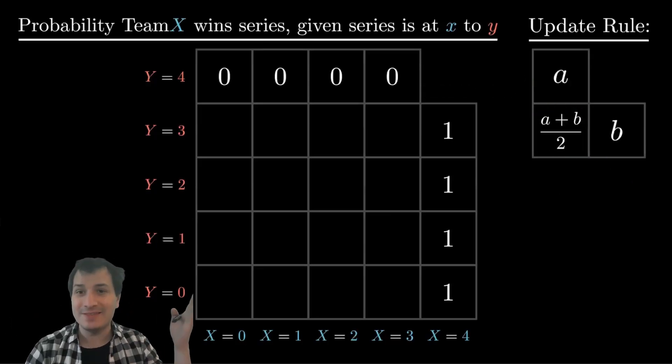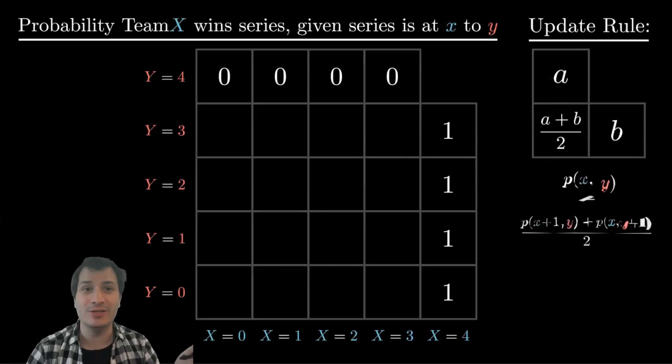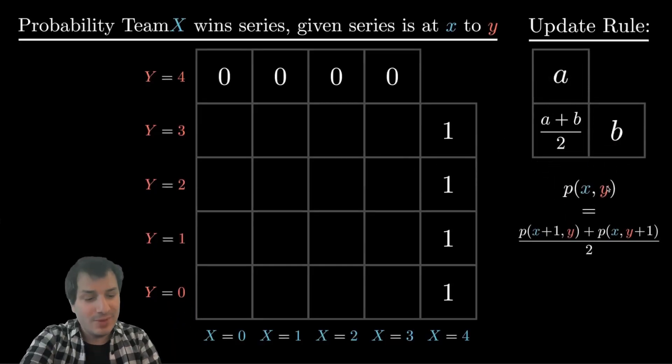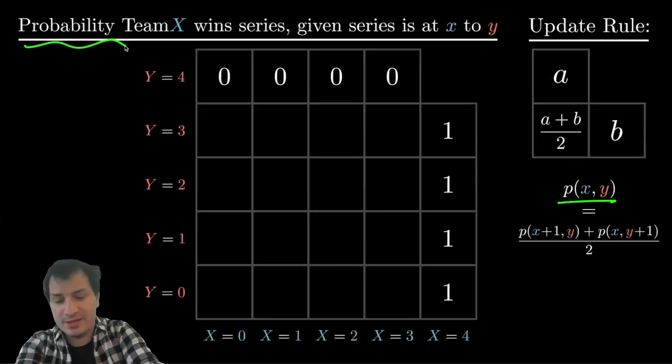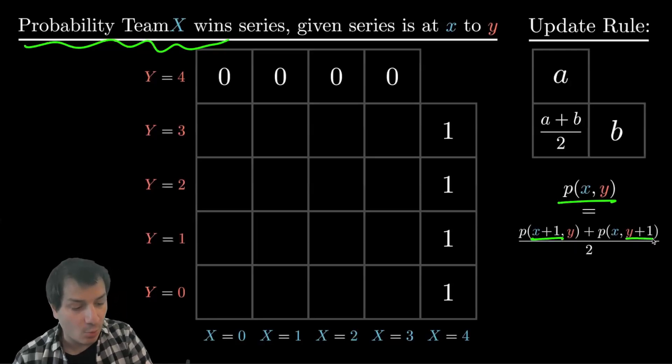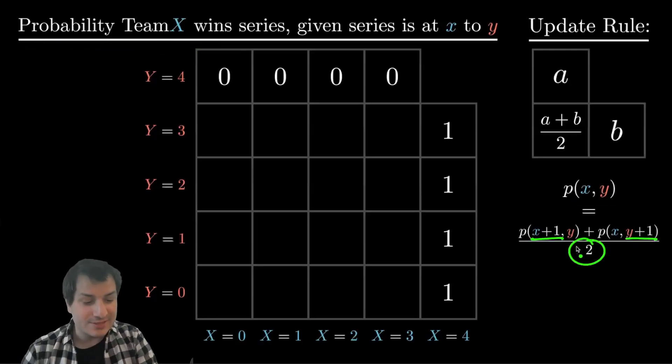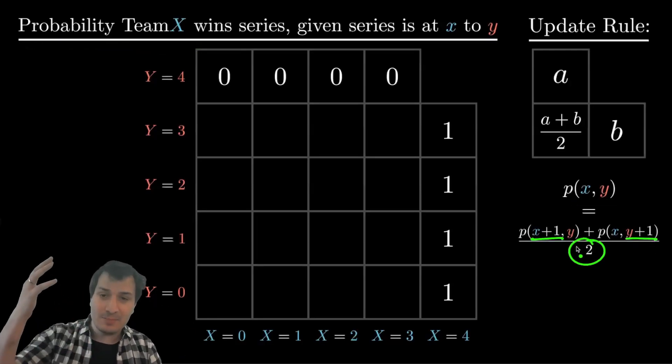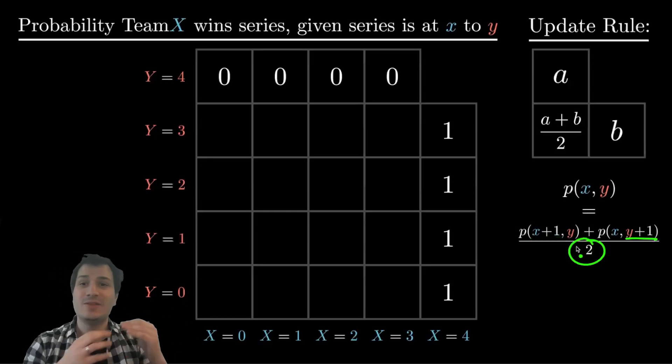Another completely equivalent way you could represent this rule is as a functional equation that looks like this. And it says if we let P of x, y be this probability that Team X wins the series, then P of x, y is the average of two numbers. It's P of x plus one, y, and P of x, y plus one. The one half here representing the probability that either x goes up by one or y goes up by one. So this is completely equivalent to this update rule that we see visually. It's just that the visual update rule is a lot easier to apply.